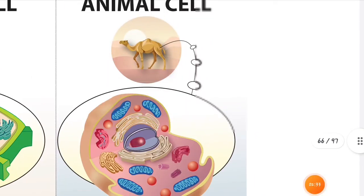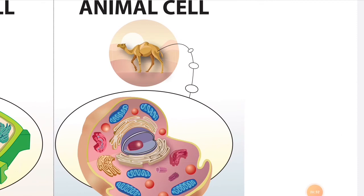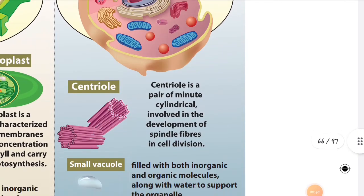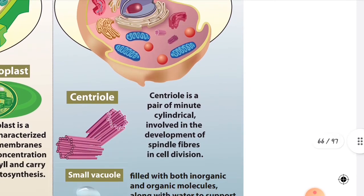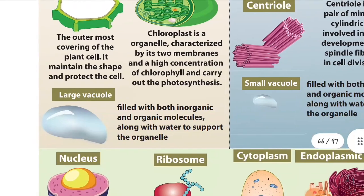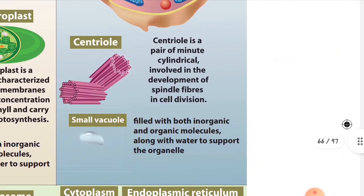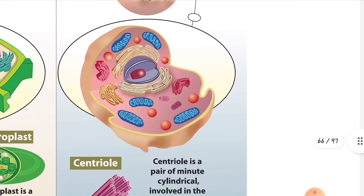Now see the animal cell. The centriole — it looks like a pencil or tube — is a pair of minute cylindrical structures involved in the development of spindle fibers during cell division. Animal cells have only a small vacuole, unlike the large vacuole in plant cells. Also importantly, animal cells have no cell wall — the cell wall is present only in plant cells.